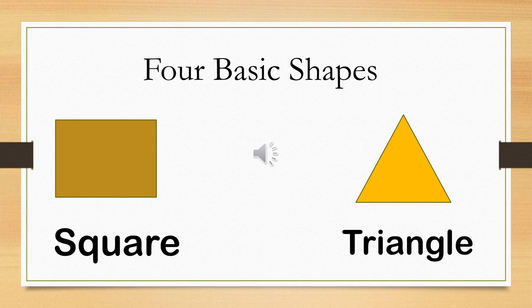The first basic shape is the square, whose all four sides are equal. Next to the square, we have something yellow in color that has three sides and three corners. It is called the triangle. So the two shapes we did just now are the square and the triangle.